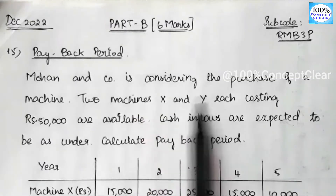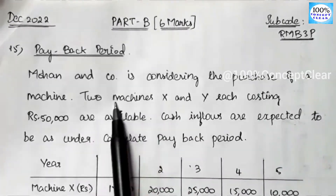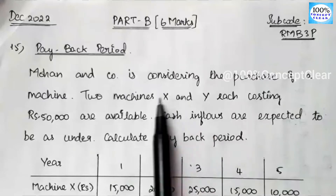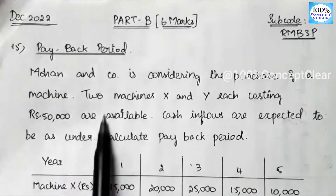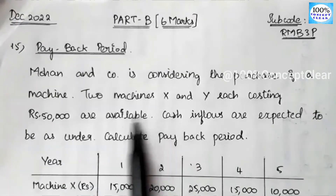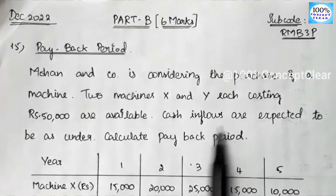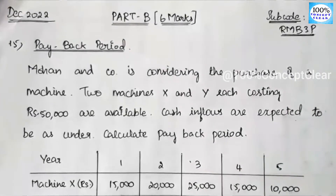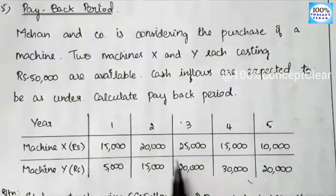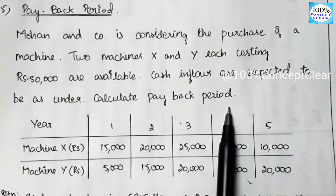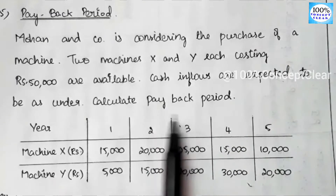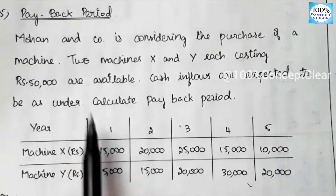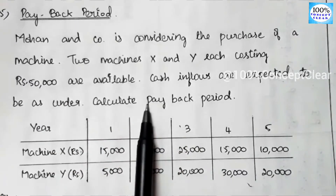Morgan & Co is the company name. We will purchase two machines: X and Y. The purchasing cost, that is the investment, is Rs. 50,000 for each. Cash inflows are expected to be as under. We will calculate the payback period for both machines.